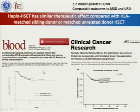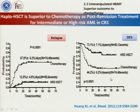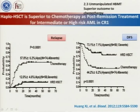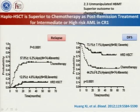Our comparative study also shows that disease-free survival is comparable to identical sibling donor transplantation or unrelated donor transplantation. We also recently demonstrated that for high-risk or standard-risk AML patients, those who received haploidentical transplantation had a significantly lower incidence of relapse and significantly higher disease-free survival compared to those who received chemotherapy.